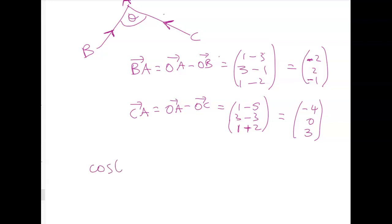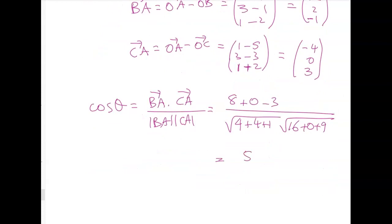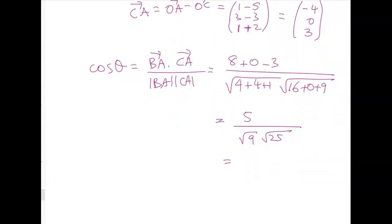Now we can find the dot product. Cos theta is going to be the dot product of BA dot CA divided by the magnitudes of those two things. So the dot product here is 8 plus 0 minus 3. Divided by the magnitude. So the magnitude of the first vector is 4 plus 4 plus 1, and the magnitude of the second one is 16 plus 0 plus 9. So that gives me 5 divided by the square root of 9 times the square root of 25, which gives me 1 third.